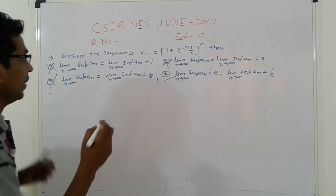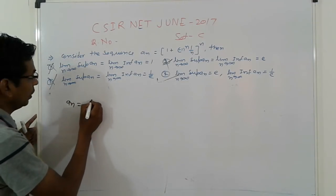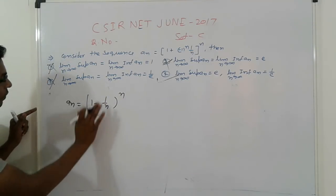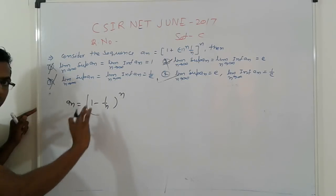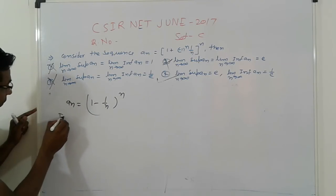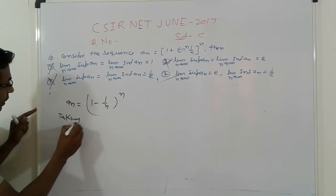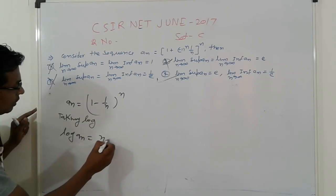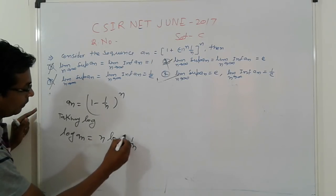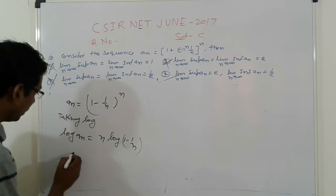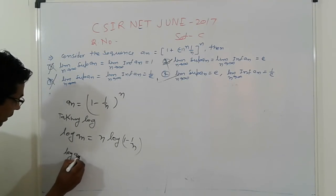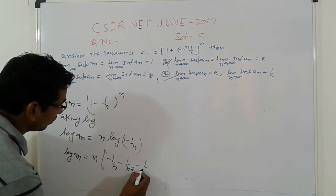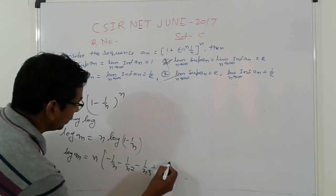I know. Suppose given An = (1 minus 1 upon n) raised to the power of n. So that type of solving, taking limits, so taking the log. So this is log of An is equal to here n log (1 upon n), simple. So log of An equal to n times (minus 1 upon n minus 1 upon n square minus 1 upon n cube) and that's multiply.